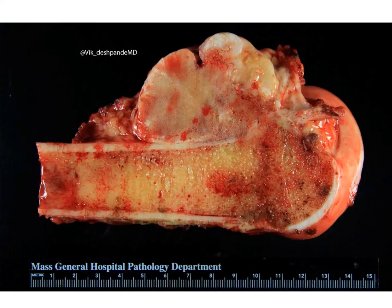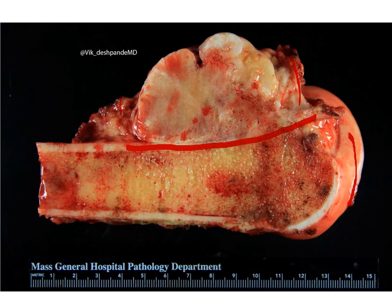Here's the corresponding gross image. You see the distal end of the femur — the articular surface. Again, the cortex is intact, implying that the lesion does not infiltrate the cortex or the intramedullary area of the bone, although this can happen occasionally. The lesion has that literally stuck-on appearance.